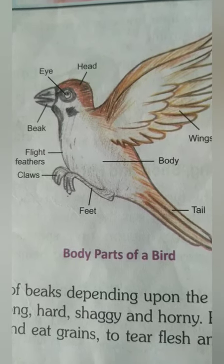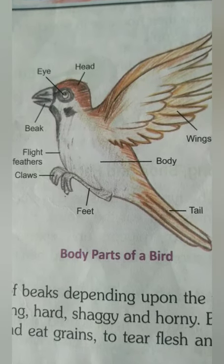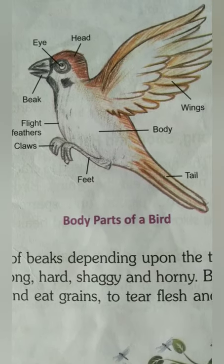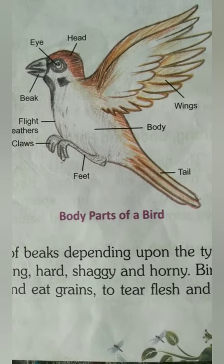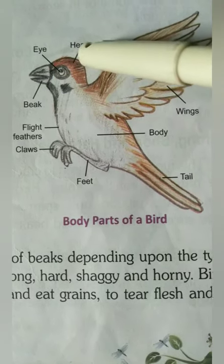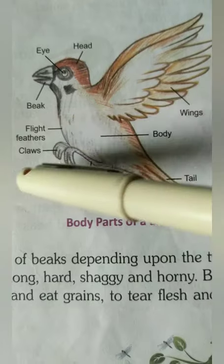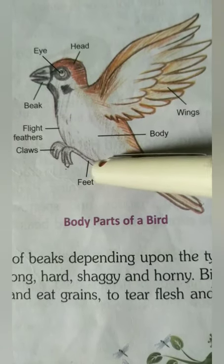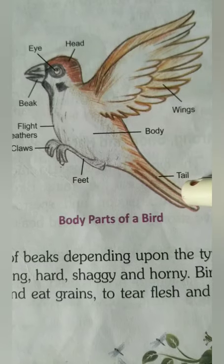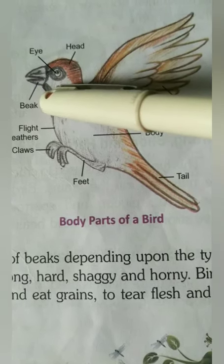What is the use of beaks? Birds use their beaks and claws for getting food. Now, the body parts of a bird: birds have eyes, head, big flight feathers, claws, feet, body, wings, and tail.